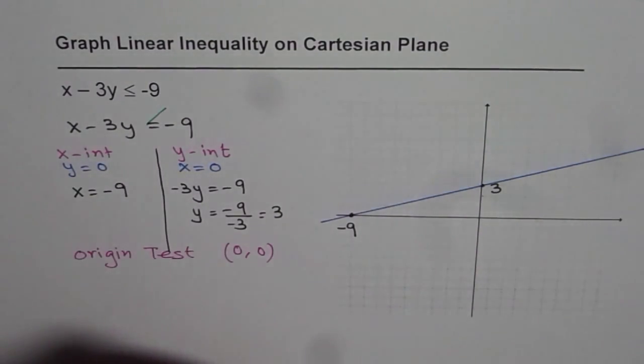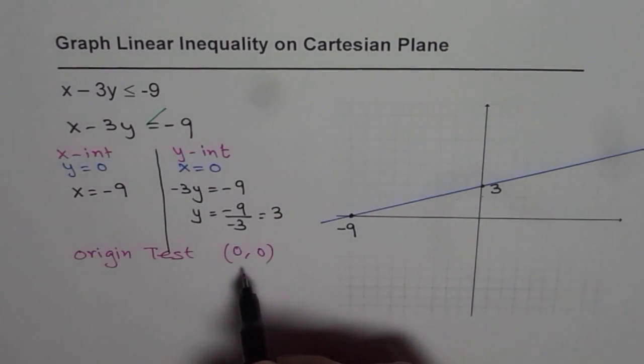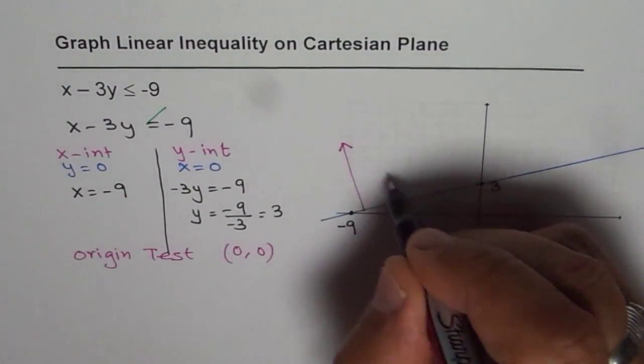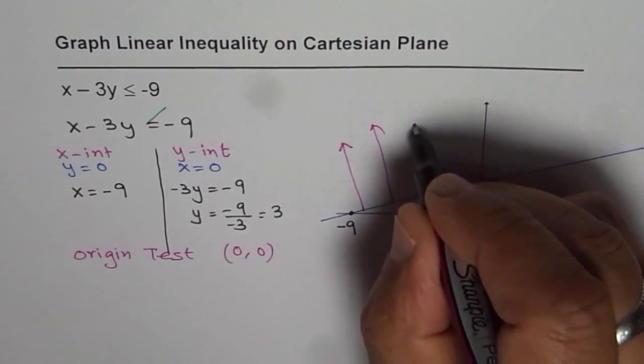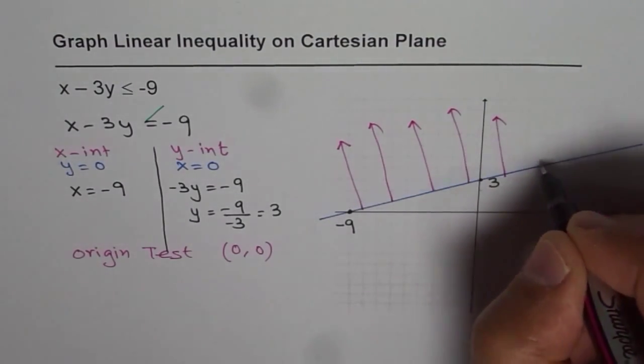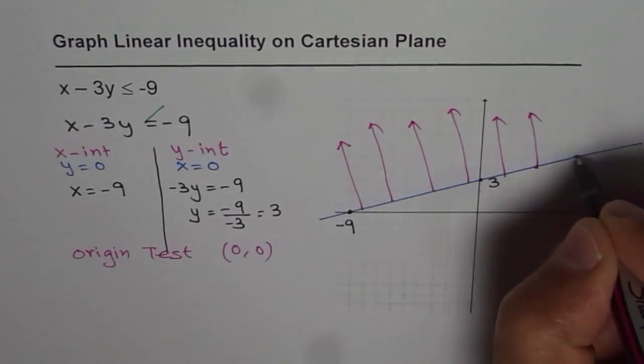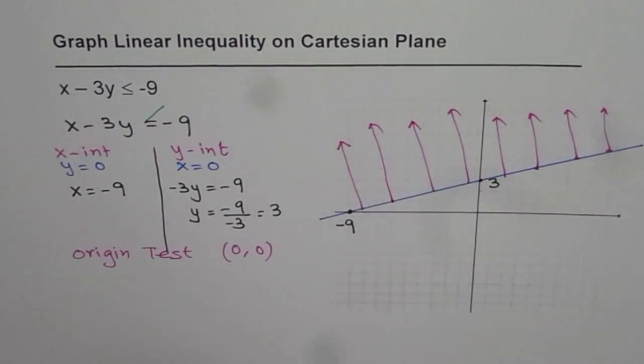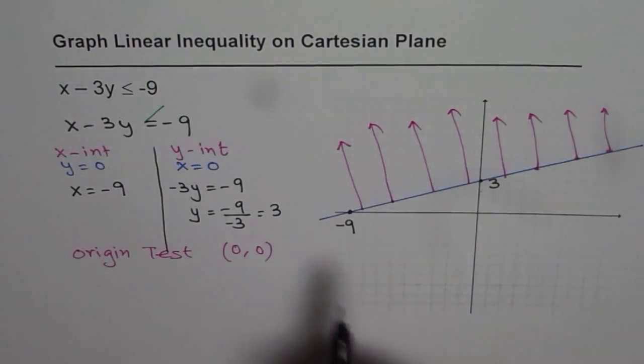Origin is not part of our solution. Since origin is not part of our solution, we have to shade in the direction opposite, including the line. The line is included, so that is the solution set.